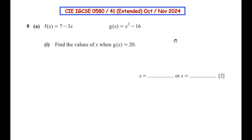Hello and welcome to my channel. In this video we are going to solve the 8th question from CIE IGCSE 0580/41 extended paper from October-November 2024. This question is from algebra and functions. f(x) is equal to 7 minus 3x, and g(x) is equal to x squared minus 16.